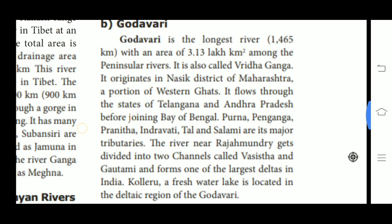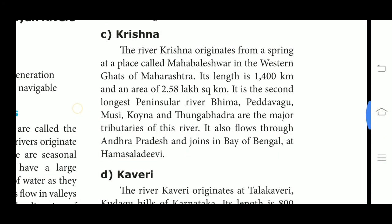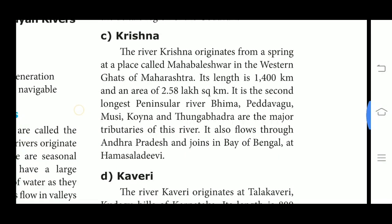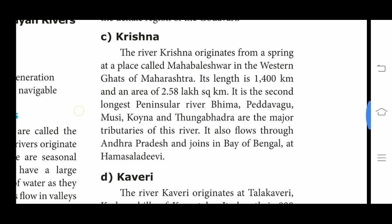Next, we see about river Krishna. The river Krishna originates from a spring at a place called Mahabaleshwar in the Western Ghats of Maharashtra. Its length is 1,400 km and it covers an area of 2.58 lakh km². It is the second longest Peninsular river, and the fourth biggest river in India in terms of water inflows and river basin area after the Ganga, Godavari and Brahmaputra.